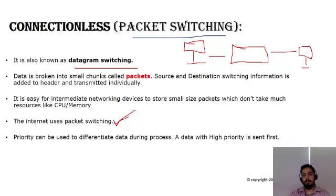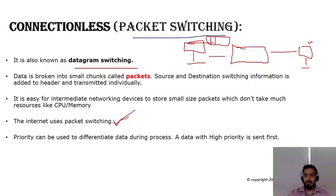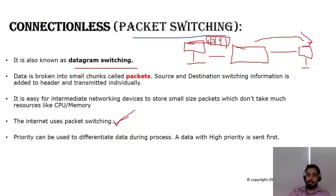To explain further, let's assume one computer is connected to a switch, which is connected to another computer. The source computer has a large amount of data to send to the destination. This device divides that data into smaller chunks — numbered one, two, three, four — and these chunks are sent individually to the destination.